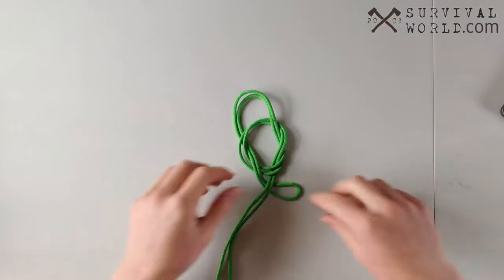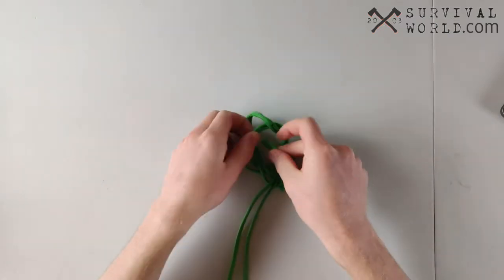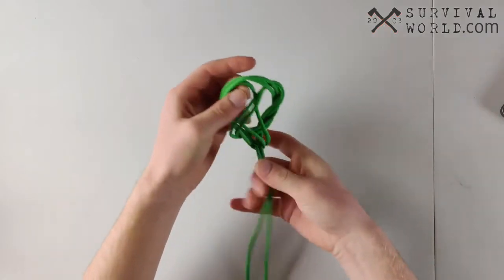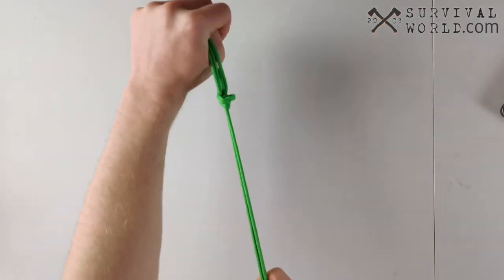And the last step to this knot is simply to push it through that original first loop we made. And with the other two strings here, so there should be three in total, we're just going to pull that tight.